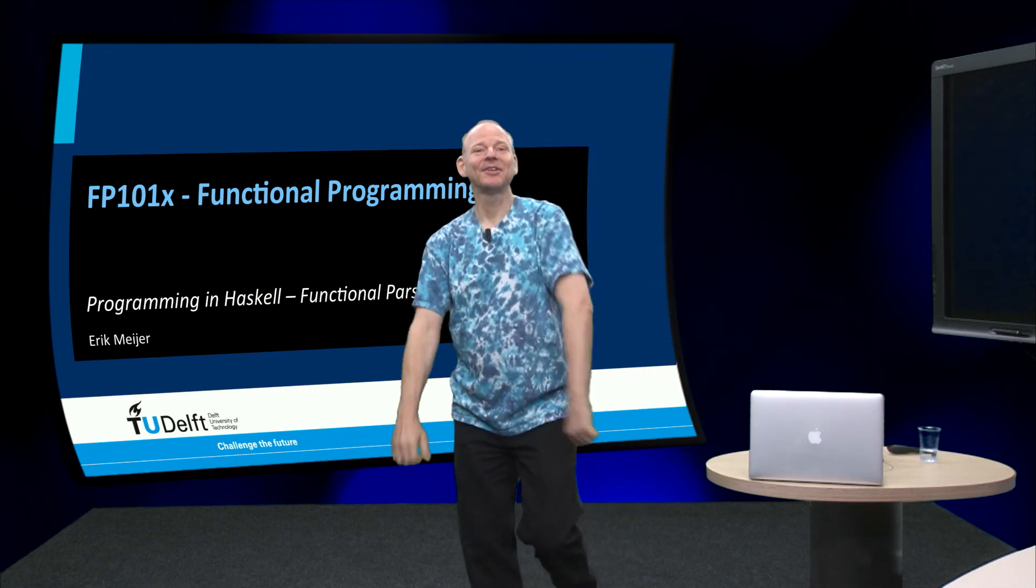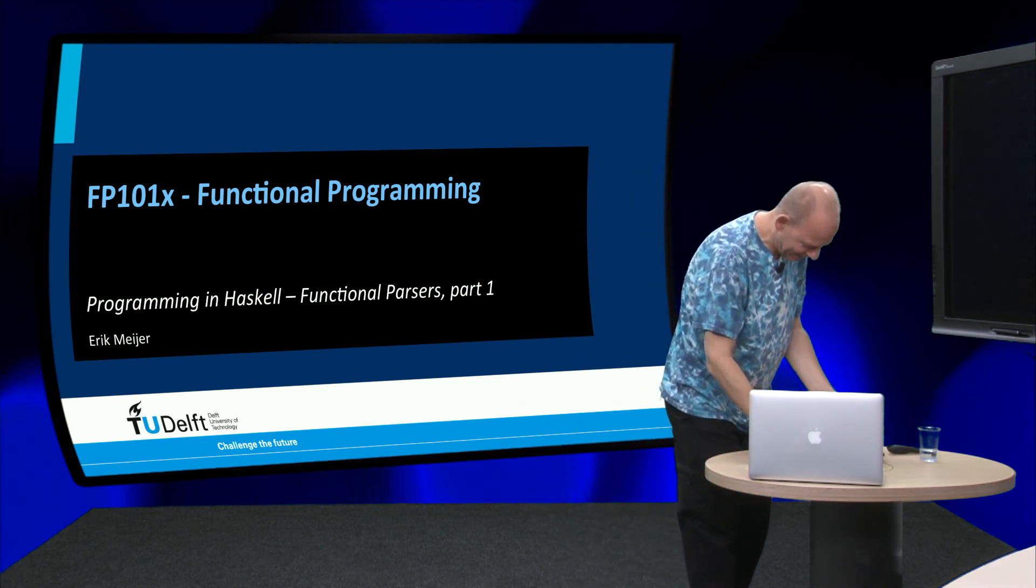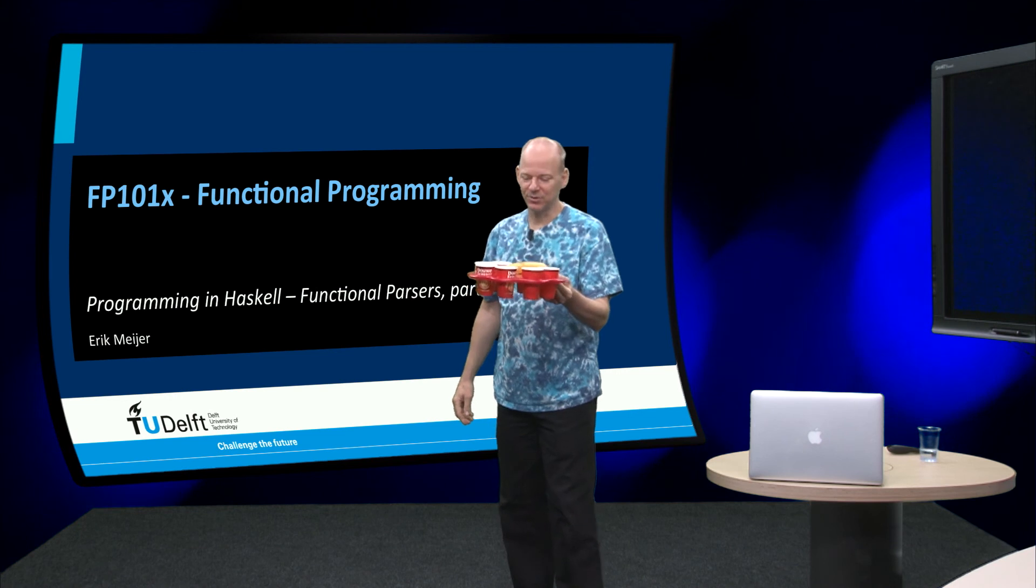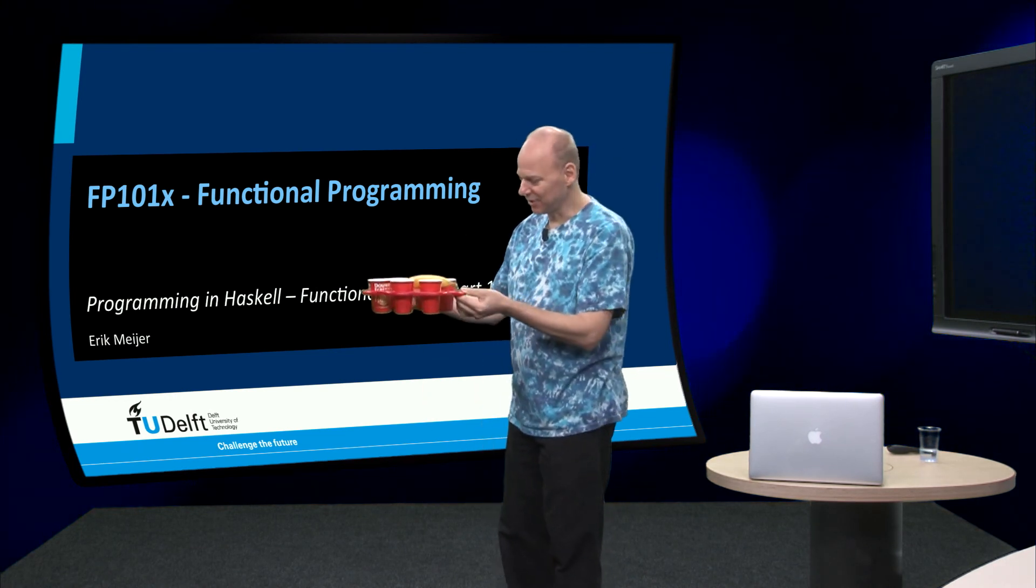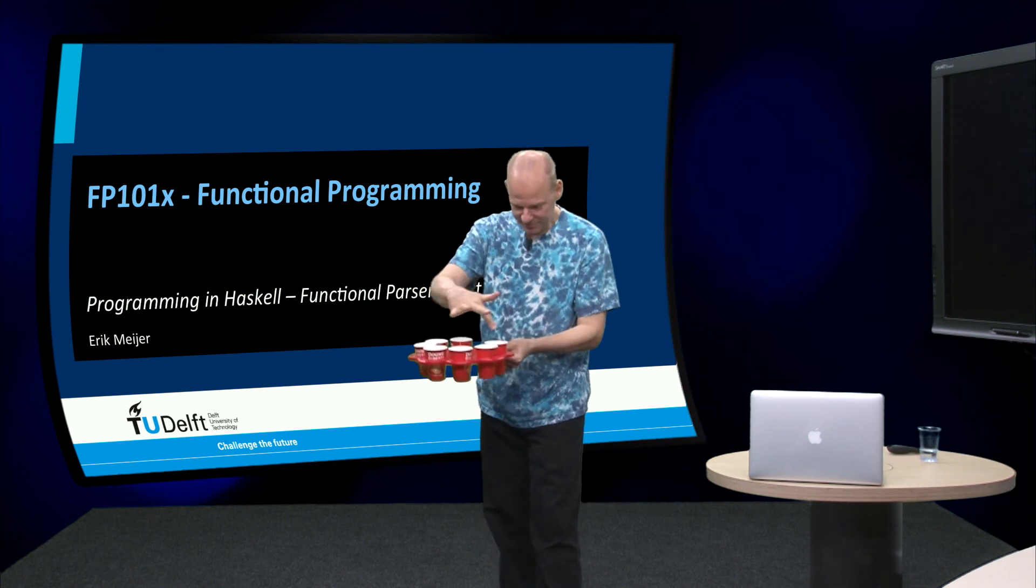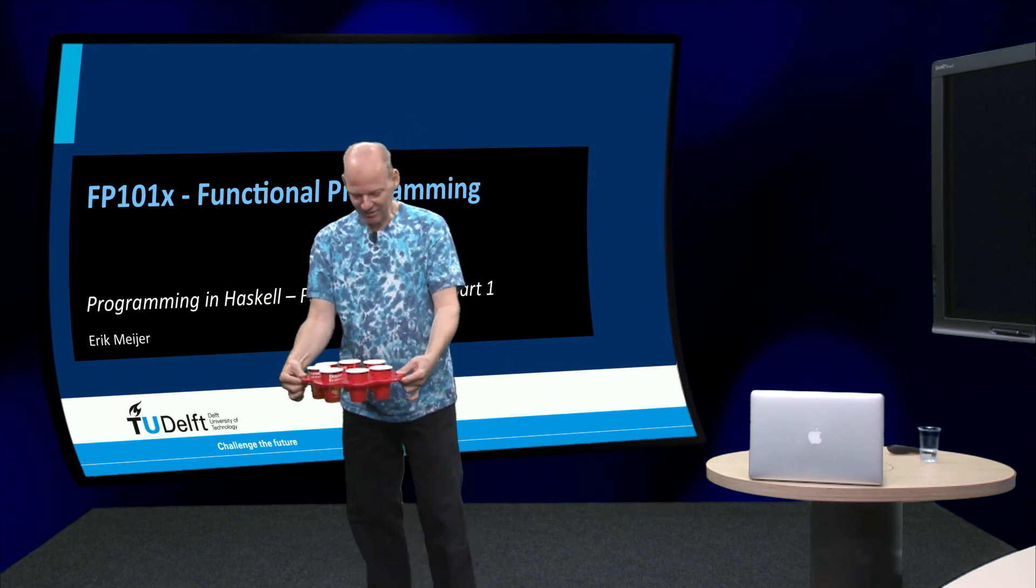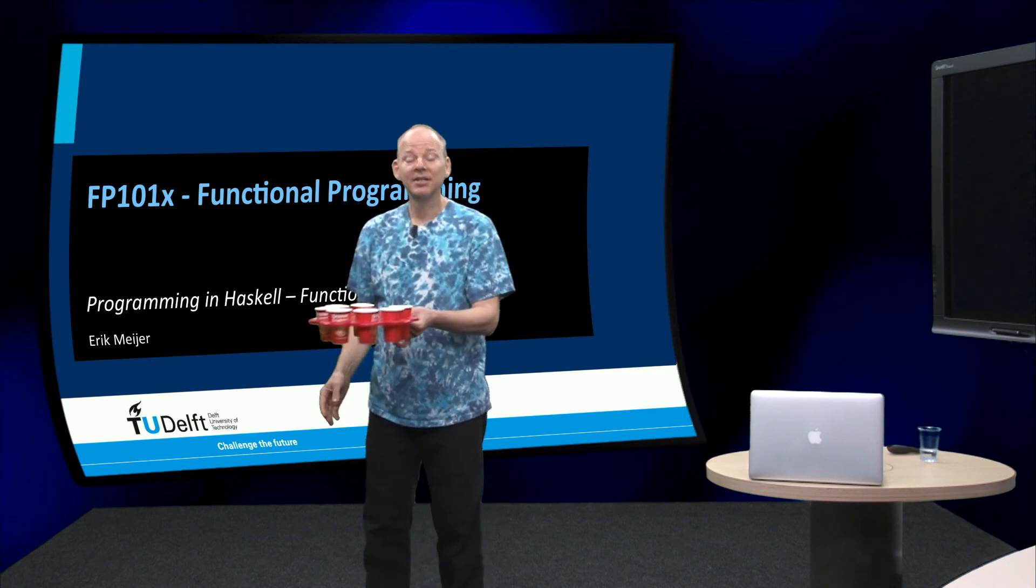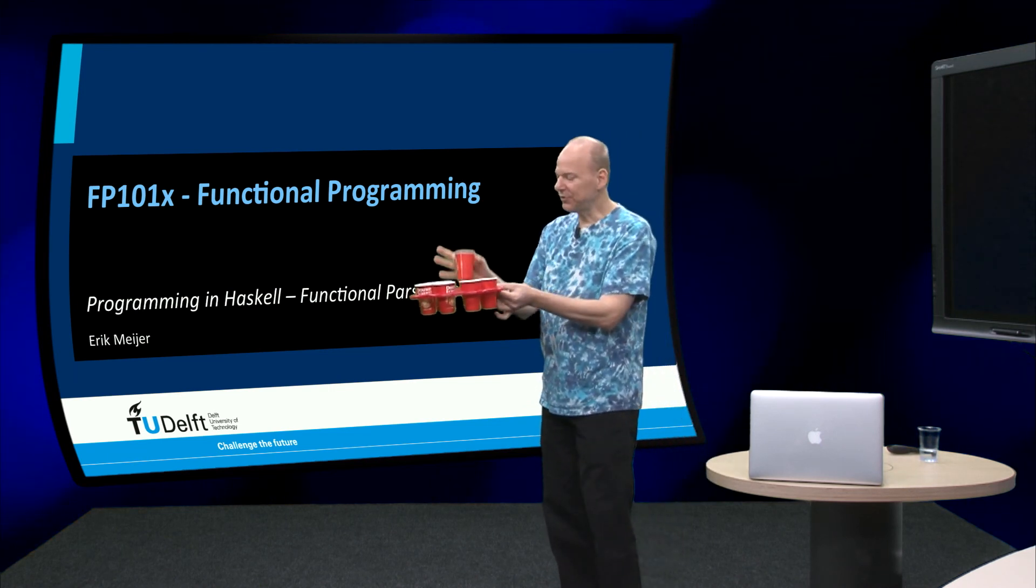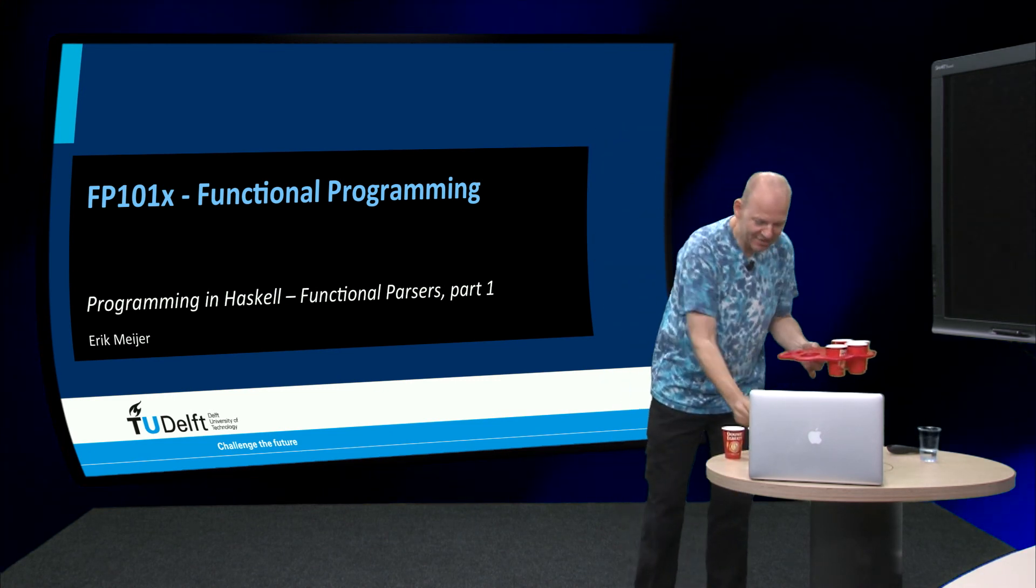Welcome everybody to yet another FP101x episode. You may have heard the saying that developers are people that turn coffee into code. Well I am a developer, I turn coffee into code and in my case also bananas. But here is a string of coffee cups, but if you look at them like this, this looks like one object. But what we want is we don't want to have one object, we want to parse this thing into a sequence of cups of coffee that we can drink such that we can code better.